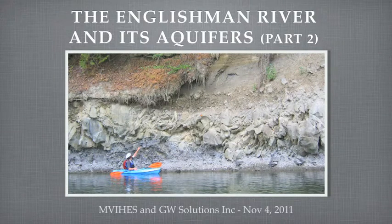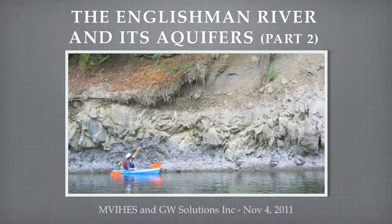In part one we described how we identified and located aquifers in contact with the Englishman River in its lower watershed. In this part of the series we are going to describe how we figured out in which direction the groundwater was flowing in the various aquifers and at what rate. We have created 3D images to illustrate the flux of groundwater toward the river.